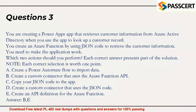Question 3: You are creating a Power Apps app that retrieves customer information from Azure Active Directory when you use the app to look up a customer record. You create an Azure Function by using JSON code to retrieve the customer information. You need to make the application work. Which two actions should you perform? Each correct answer presents part of the solution. A. Create a Power Automate Flow to import data. B. Create a custom connector that uses the Azure Function API. C. Copy your JSON code to the app. D. Create a custom connector that uses the JSON code. E. Create an API definition for the Azure Function. Answer: B and E.